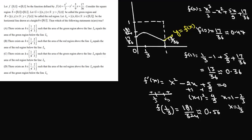The problem defines: if y > f(x), it is called the green region, and if y < f(x), it is called the red region. So the region of the square above the curve is the green region, and the region below the curve is the red region.